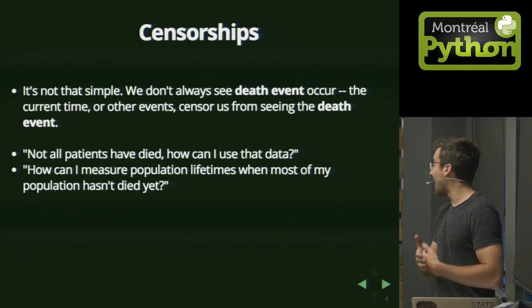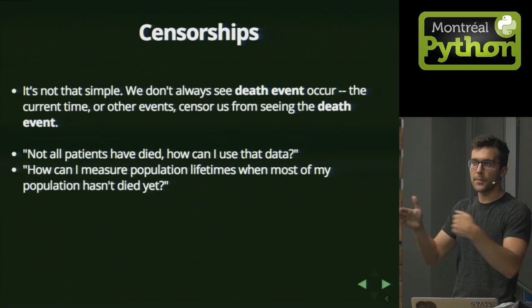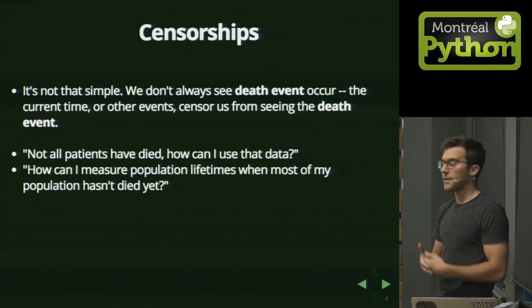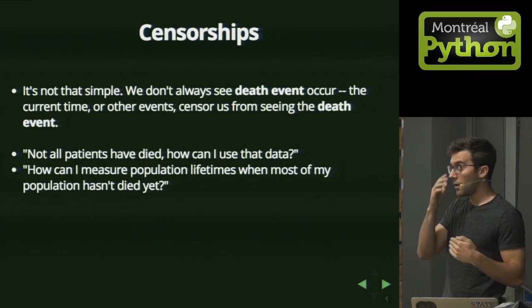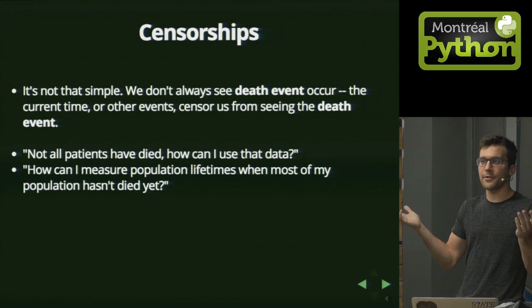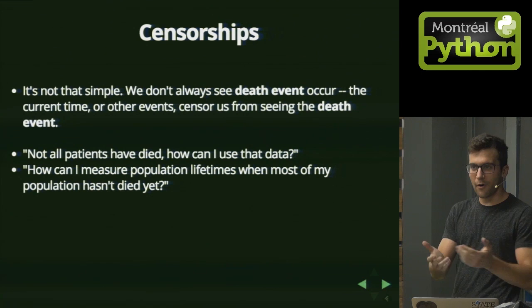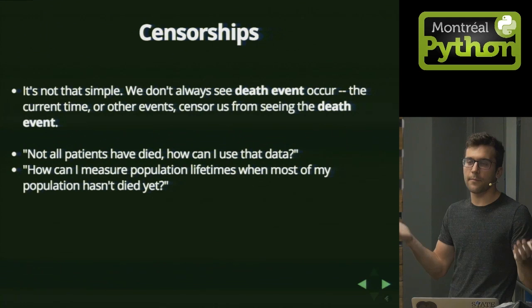I haven't seen all the death events. I know up to some point the person hasn't died yet, and I know they're going to die in the future possibly, but I don't know when. Often it's the current time that censors us from seeing the death event. No one here has obviously died, so all your death events have been censored from me. If I were to measure your average lifetime, I would have to incorporate that censorship.